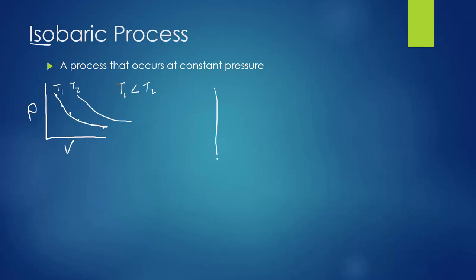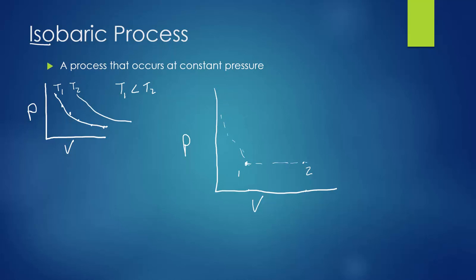Now on our pressure versus volume curve, we have state 1 at a certain volume and pressure and state 2 at the same pressure but a different volume. We want to understand how something could move from state 1 to state 2 while pressure remains constant. Connecting isotherms through these points shows that state 2 must occur at a higher temperature. So how do we get a higher temperature without a higher pressure?